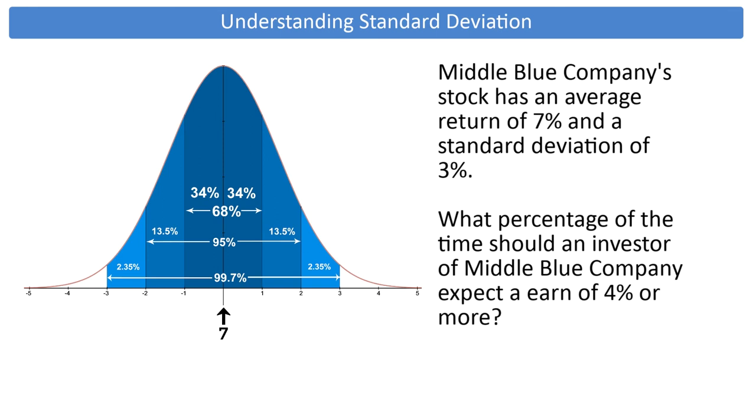Our mean or average is 7%, and the measuring stick standard deviation is 3%. Each standard deviation away from the mean is 3%.